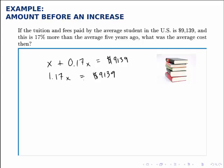The other way to get to this step is to notice that if tuition has risen by 17%, the amount that it is today is 117% of what it was before. So 117% of the original unknown is the amount it is today.